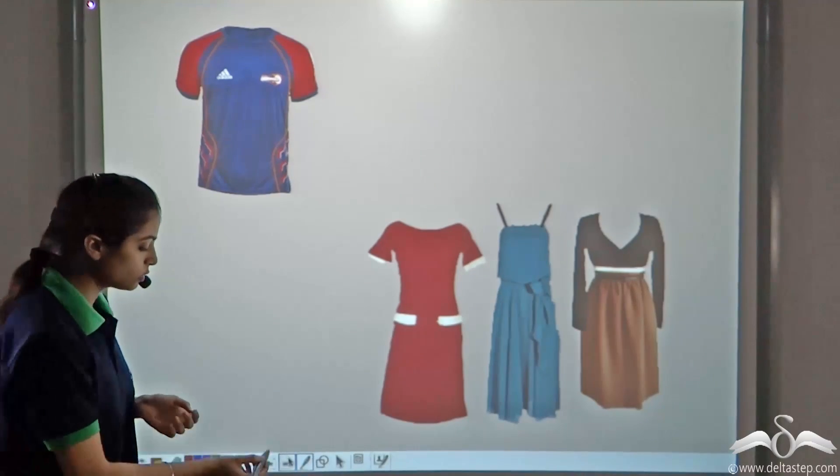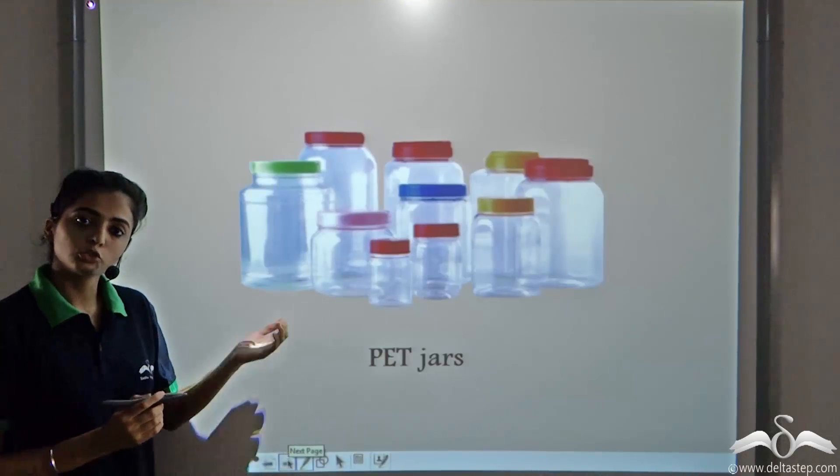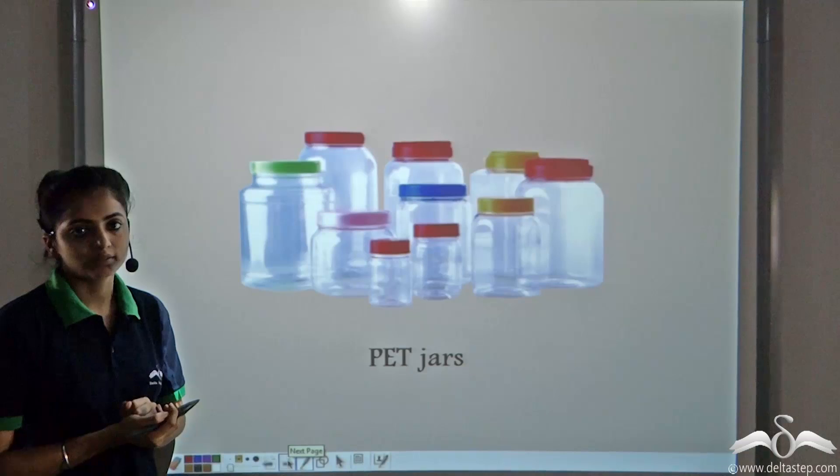Polyester is also used for making the PET jars that we use to store things in the kitchen. So even they are made up of polyester.